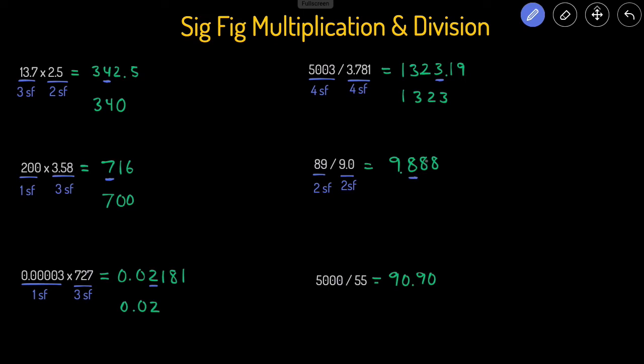And we look at the number next to it. Eight is greater than five, so that means we are going to round this eight up, so this becomes 9.9. Our final answer has two sig figs.